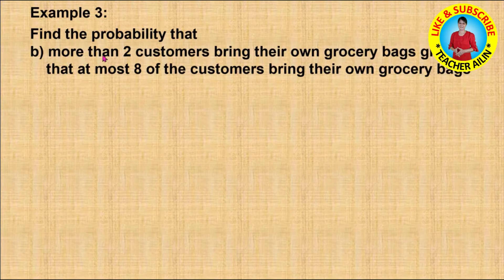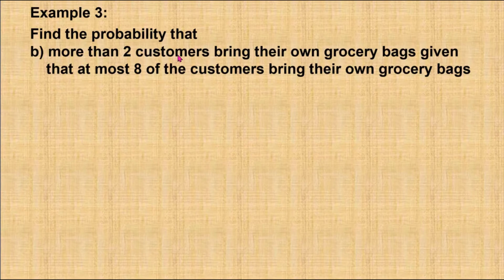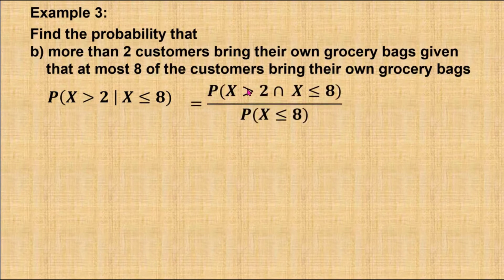So the probability that more than 2 customers bring their own grocery bags, that is X greater than 2, given that at most 8 of the customers bring their own grocery bags, that is X less than or equal to 8. From the formula of conditional probability, it is equal to the probability of X greater than 2 intersect X less than or equal to 8, divided by the probability of X less than or equal to 8.